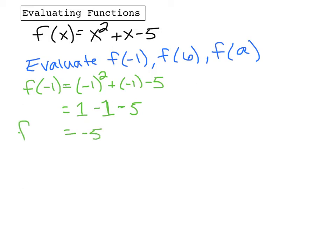So, f of negative 1 equals negative 5. That's saying the value of the function, the value of the function at negative 1 is equal to negative 5. That's what this statement is saying. And that's done. That's all you do.